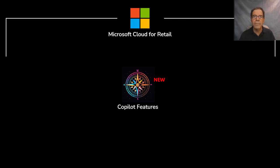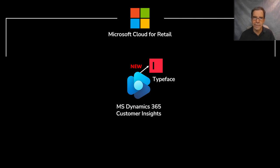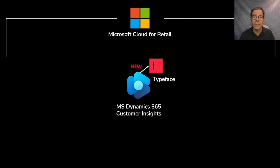On a related note, the announcement mentions that customers will also now have access to Typeface. Typeface is a platform that uses generative AI to produce content and images aligned to a company's brand kit, including themes, fonts, and product shots located in a central asset library. That new connector is an important integration — it could help streamline the content creation process for marketers using that platform. So that's part three of the announcement, and here's what that looks like.